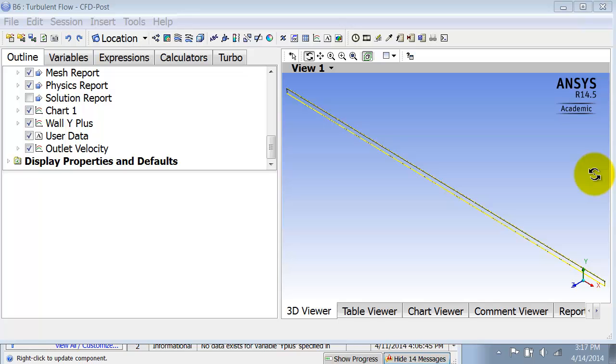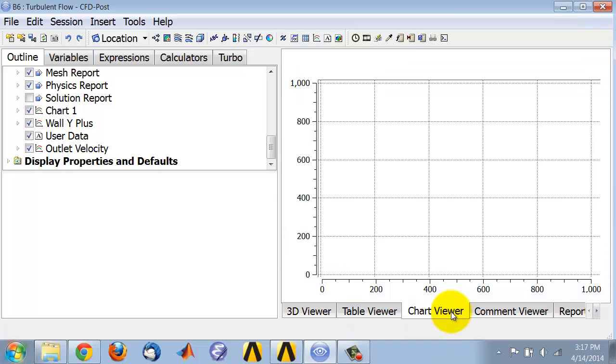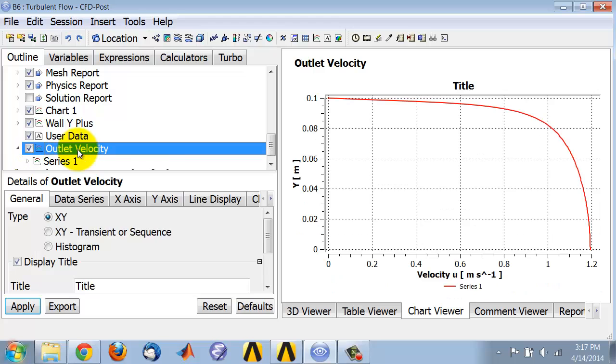Okay, here I'm going to show you how to create a non-dimensional version of the velocity profile plot. I will go into the chart viewer and double click on the outlet velocity chart to see the current chart that I have.